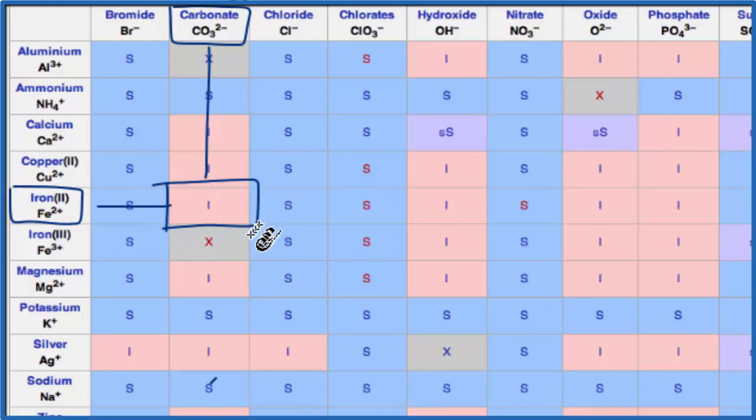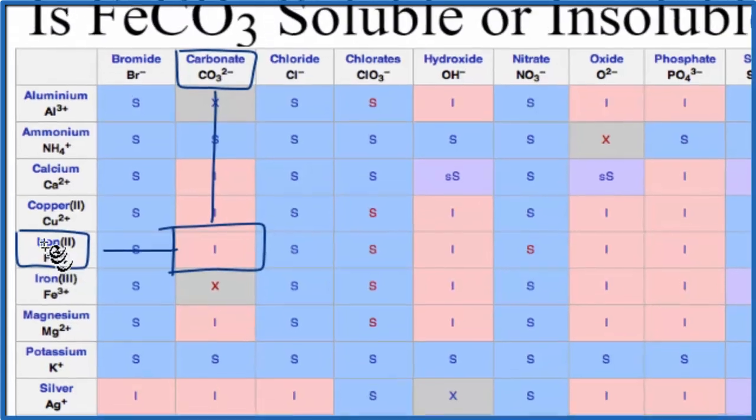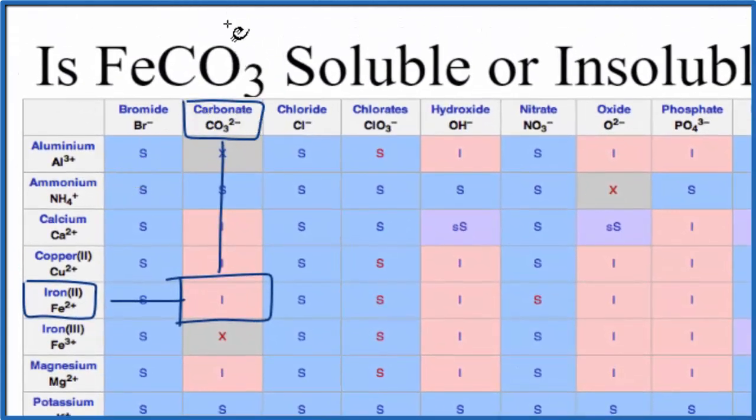Note that it's iron(II), that Fe 2+. We see the carbonate ion, that's always 2-minus, so iron that has to be 2+ there for this to be a neutral compound. There is one last way we could figure out whether FeCO3 is soluble or insoluble in water.